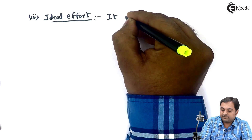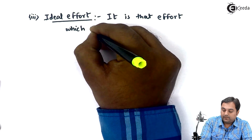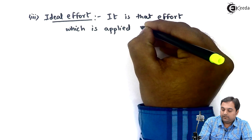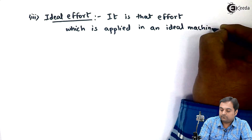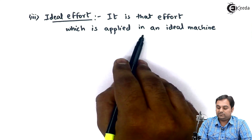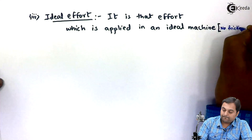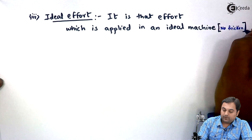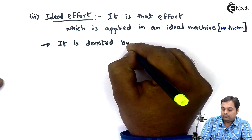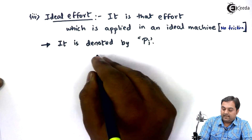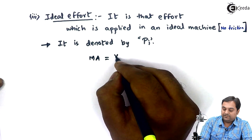The next definition is ideal effort. Ideal effort is that effort which is applied in an ideal machine — a machine with no friction. Ideal effort is denoted by P with suffix i. Since it is an ideal machine, mechanical advantage is equal to velocity ratio.